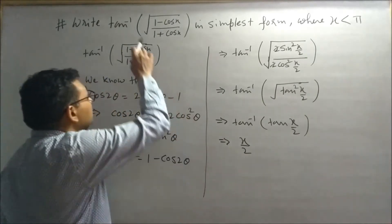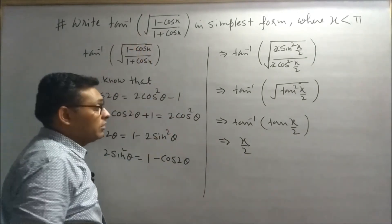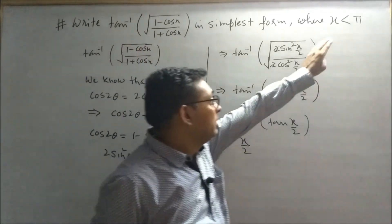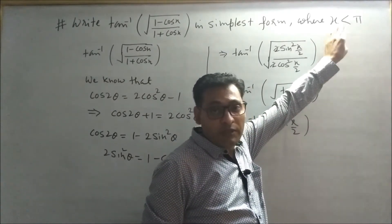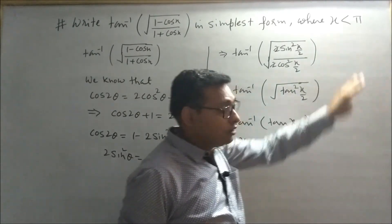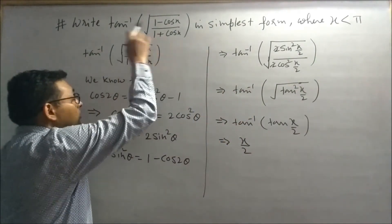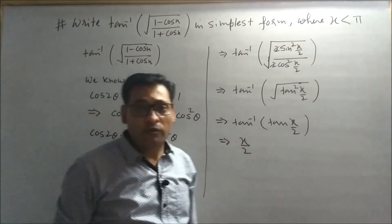This is the simplest form of this inverse trigonometric function. Now here we are given x is less than pi - this is the domain for which this function has been defined.